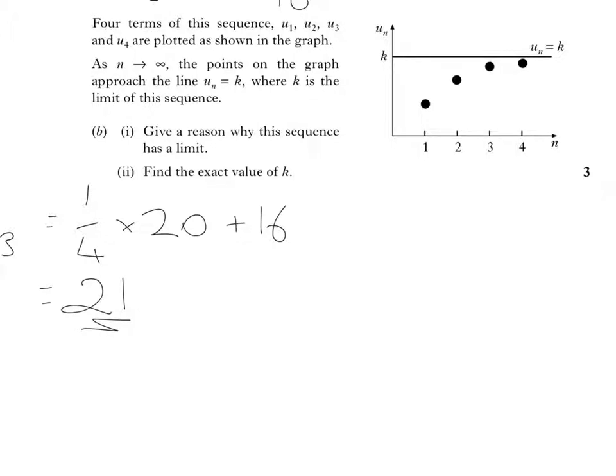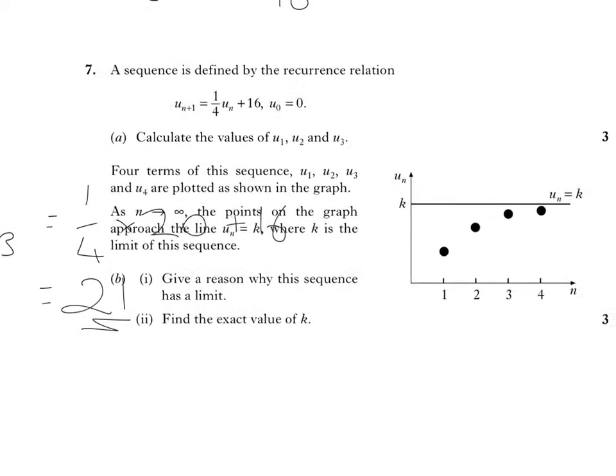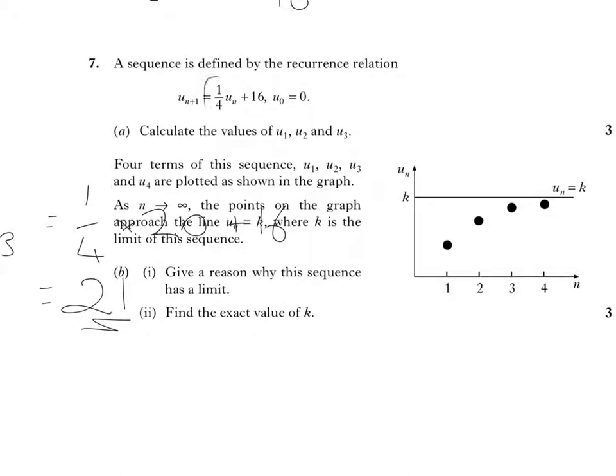Part B gives a reason why this sequence has a limit. Well, it has a limit because the value for A in front of U is between minus 1 and 1.